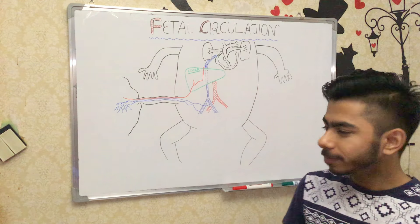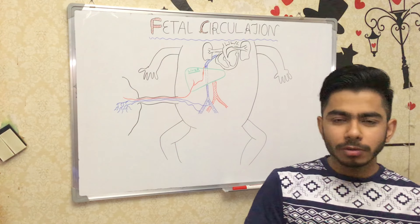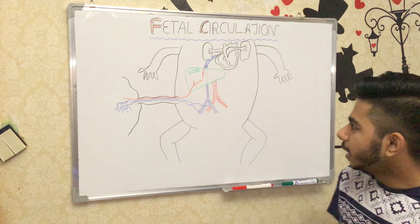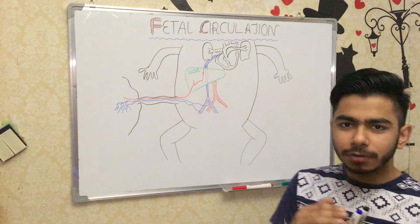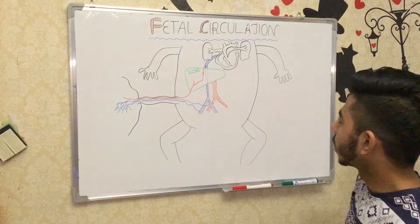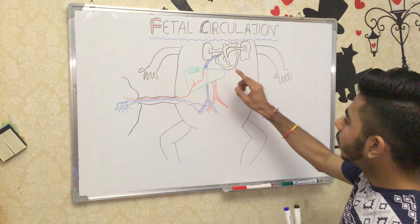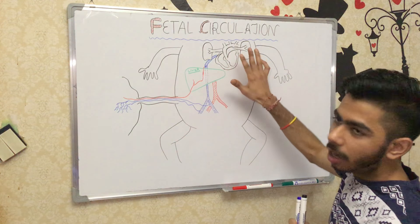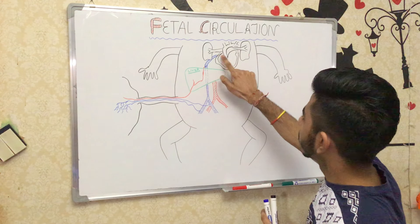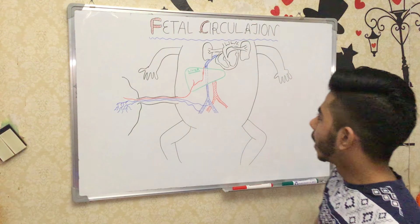Before understanding fetal circulation, we should know very well about adult circulation. In adult circulation, the inferior vena cava and superior vena cava drain into the right atrium. Here I have drawn the heart: this is the right atrium, this is the left atrium, this is the left ventricle, and this is the right ventricle.